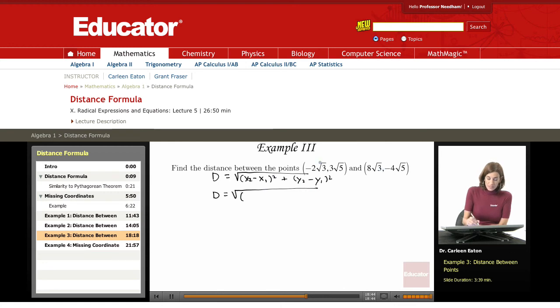Alright, so I'm going to let this be x1, y1, and x2, y2. So starting out with x2, that's 8 radical 3 minus negative 2 radical 3, and this entire expression is squared.